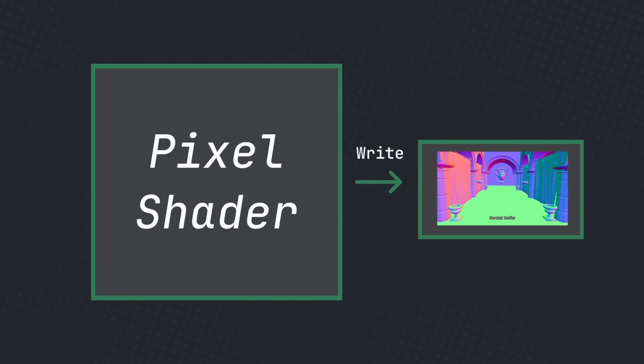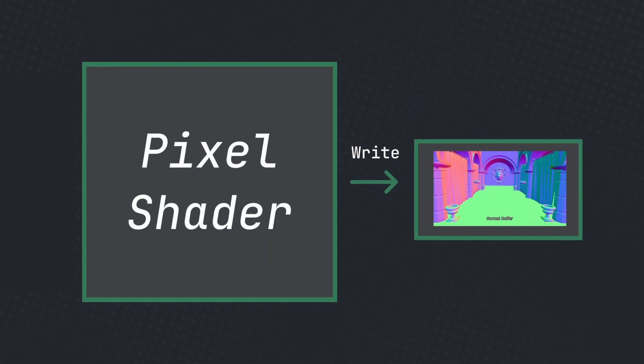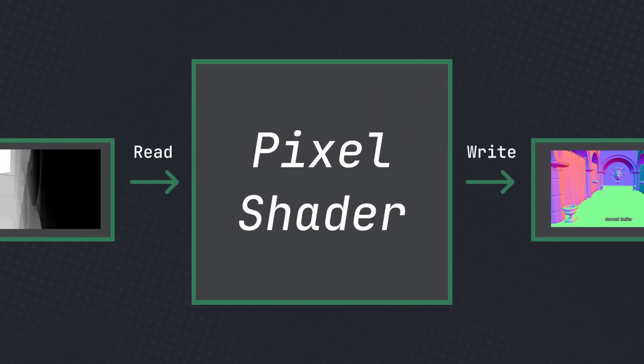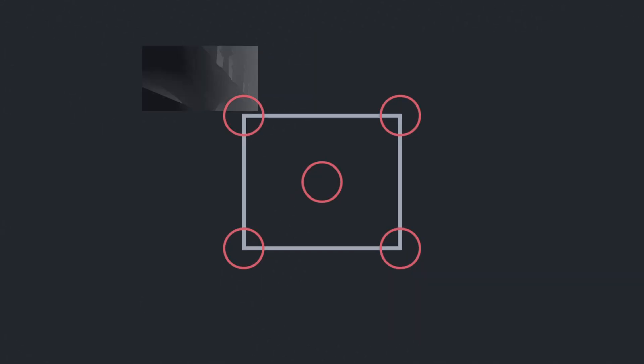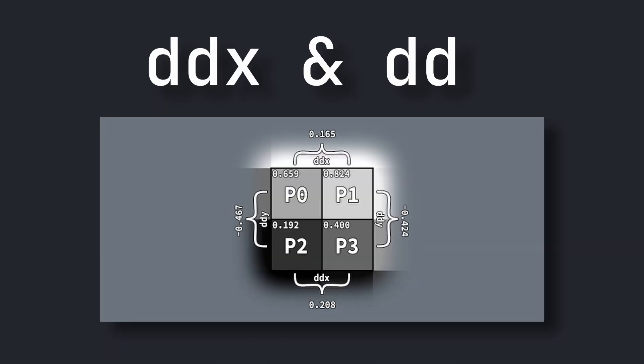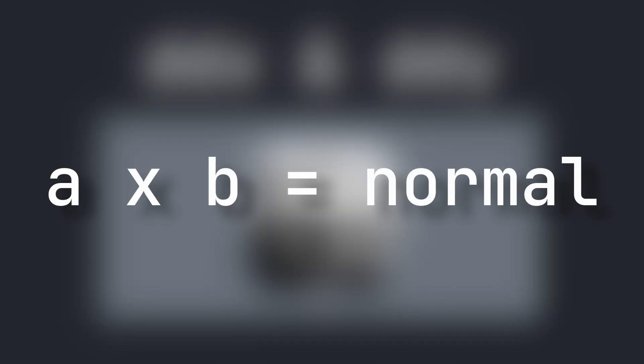We can also reconstruct the normals from the depth. Since we always want to write to the normal map, instead of reading from the normal map as well, we just read from the depth instead. We estimate the normals using depth differences: we sample the depth around a pixel, calculate the difference to get a tangent using ddx and ddy, and then use the cross product to get the normal. This is fast, but it comes with artifacts.